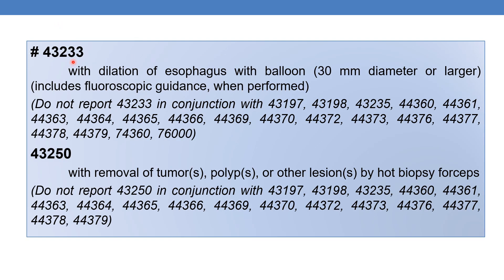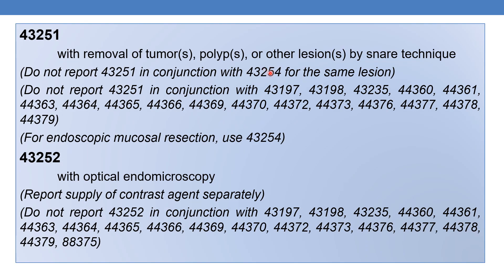The next is 43233: esophagogastroduodenoscopy, flexible, transoral, with dilation of the esophagus with balloon 30 mm diameter or larger. It includes fluoroscopic guidance when performed. The next is 43250: esophagogastroduodenoscopy, flexible, transoral, with removal of tumor, polyp, or lesion by hot biopsy forceps. The next is 43251: esophagogastroduodenoscopy, flexible, transoral, with removal of tumor, polyp, or other lesion by snare technique.